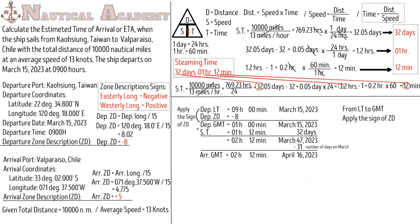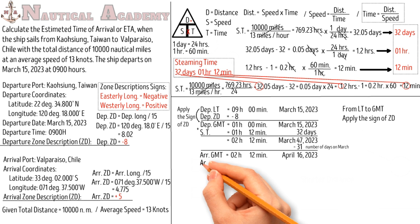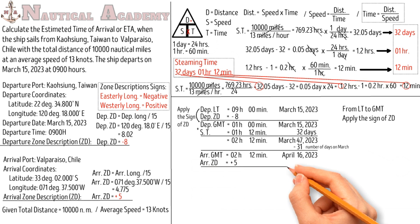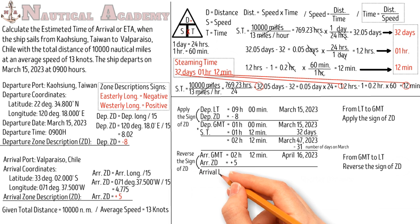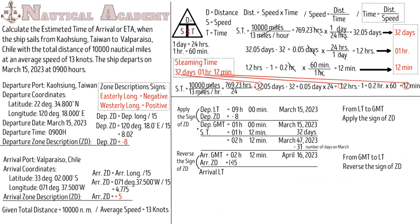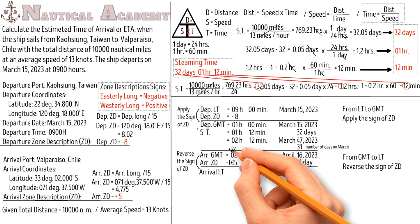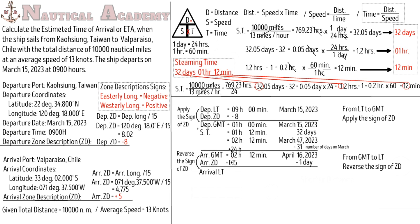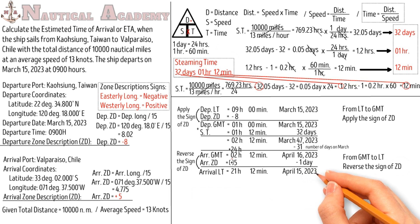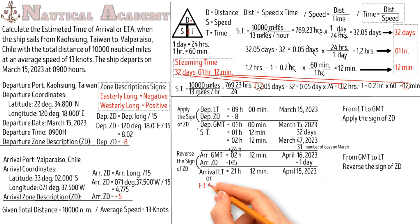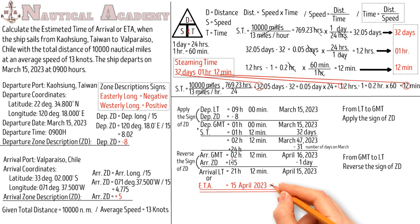This arrival time is the time for all places along the Greenwich meridian with zone description 0. So to find the local time of arrival in Valparaiso, Chile, we will apply the arrival zone description, which is positive 5. The rule is: from Greenwich Mean Time to local time, reverse the sign of the zone description. Then subtract 5 from 2 hours — but it cannot be, so borrow 1 day from April 16, then add 24 hours into 2 hours. So the arrival local time in Valparaiso, Chile will be at 21:12 hours on April 15, 2023. This is the estimated time of arrival, or ETA, which will be on the 15th of April 2023 at 21:12 hours.